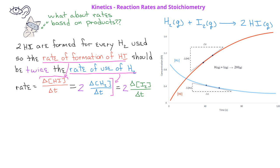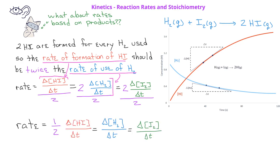We can simplify this by removing the coefficient of two in front of iodine and hydrogen and moving the two as a fraction in front of hydrogen iodide. We would then write that the change in the concentration of hydrogen equals the change in the concentration of iodine, which equals one half the change in the concentration of the hydrogen iodide product.